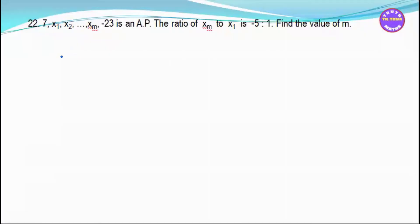If you have a question about this, you can see that the answer is 202, 303 — so you can see that the answer is 203, 303.